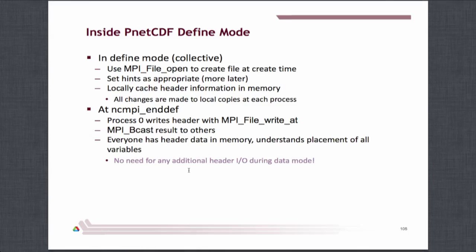The non-record variables are stored contiguously right after the header. It's only these record variables with a special unlimited dimension that causes a bit of a problem — this is the flexibility versus performance tradeoff. You can have a variable that grows without bound, but it makes it difficult to do that as fast as you possibly could. This notion of define mode versus data mode helps us collect all the necessary activity in one step up front, broadcast that data to everybody else, make sure everyone's got the same values, and then never need to communicate ever again among processes. The header is then locked into position until you change it with an explicit change back into define mode.